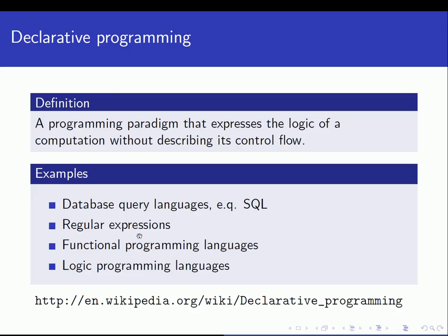Regular expressions are another example. When we write regular expressions, we use a particular language and we are trying, for example, to search for strings that fulfill a certain pattern. We are not stating how the underlying system is supposed to find the strings we are searching for. Functional programming and logic programming are also two examples of the declarative programming paradigm. In functional programming, we rely on recursion and do not have this sequence of steps as in imperative languages, so we are expressing the logic of the computation without exactly describing how the solution is found. And logic programming is the one we are discussing today.